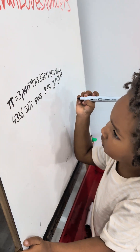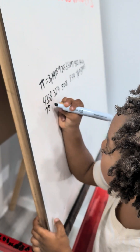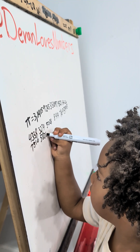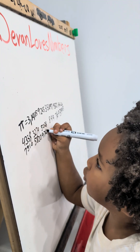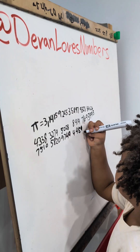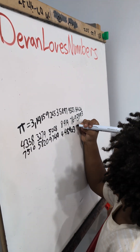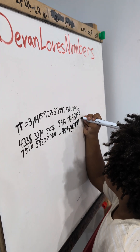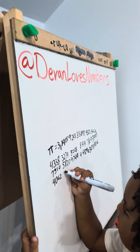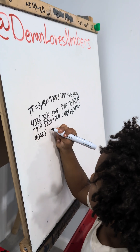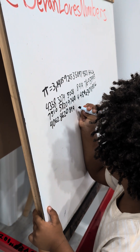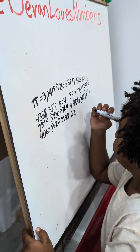5, 1, 0, 5, 8, 2, 0, 9, 7, 4, 9, 4, 4, 5, 9, 2, 3, 0, 7, 8, 1, 6, 4, 0, 6, 2, 8, 6, 2, 0, 8, 9, 9, 8, 6, 2, 8, 0, 3, 4, 8, 2, 5, 3, 4, 2, 1, 1, 7, 0, 6, 7, 9, 8, 2, 1, 8, 2, 1, 4, 8, 0, 8.